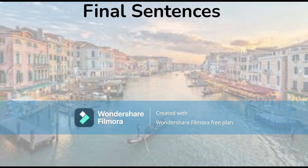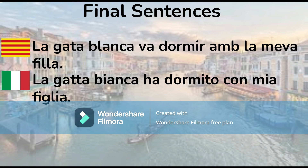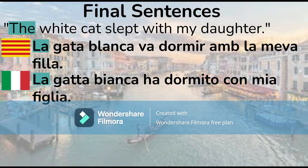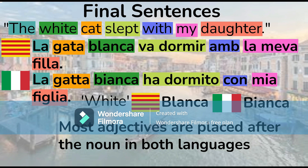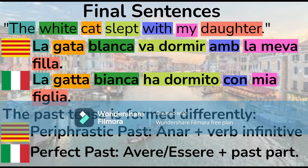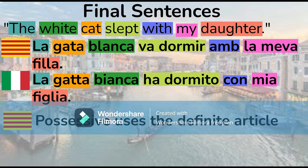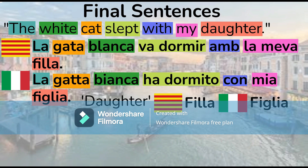Let's look at some final sentences. In Catalan: 'la gata blanca va dormir amb la meva filla.' In Italian: 'la gatta bianca ha dormito con mia figlia.' These sentences mean 'the white cat slept with my daughter.' First we see cognates with the word for cat: 'gata,' 'gatta' — these are the feminine forms. Most adjectives in both Italian and Catalan are placed after the noun: 'blanca,' 'bianca.' Note that the past tense is also formed differently — in Catalan it's the paraphrastic past, but in Italian it's the perfect past. Also note that the conjunction for 'with' is different in both languages. And we see that the possessive is used with the definite article in Catalan, but in Italian the possessive is used by itself because we're talking about family members. With other nouns, the definite article is used.